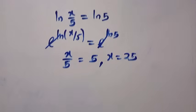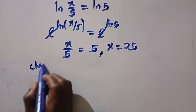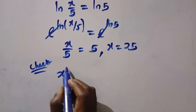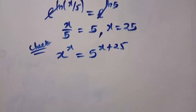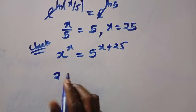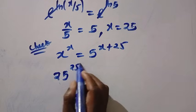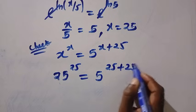So 25 is the final answer to this and we can just try and put a quick check on this. So to check for this we have x power x equals 5 raised to power x plus 25. At x equals 25 we have 25 raised to power of 25 equals 5 raised to power 25 plus 25.